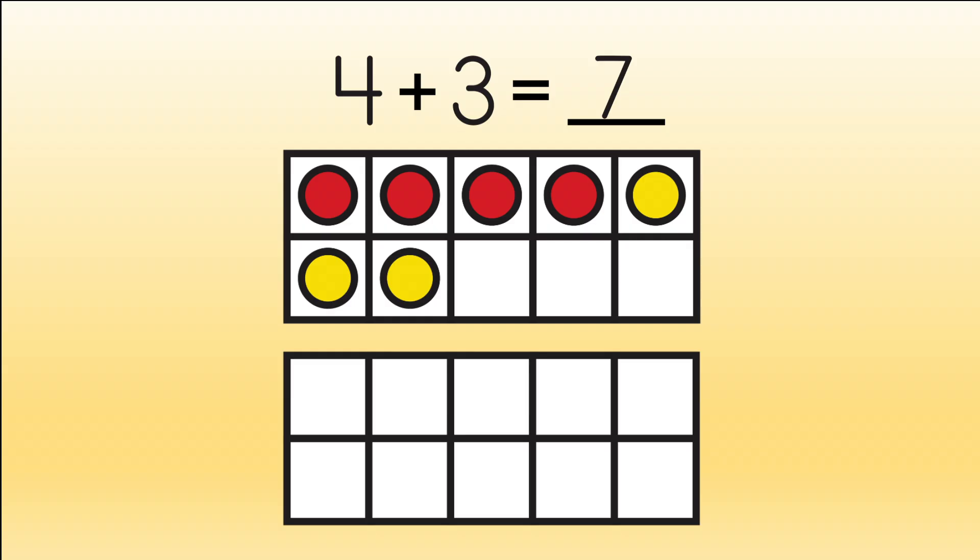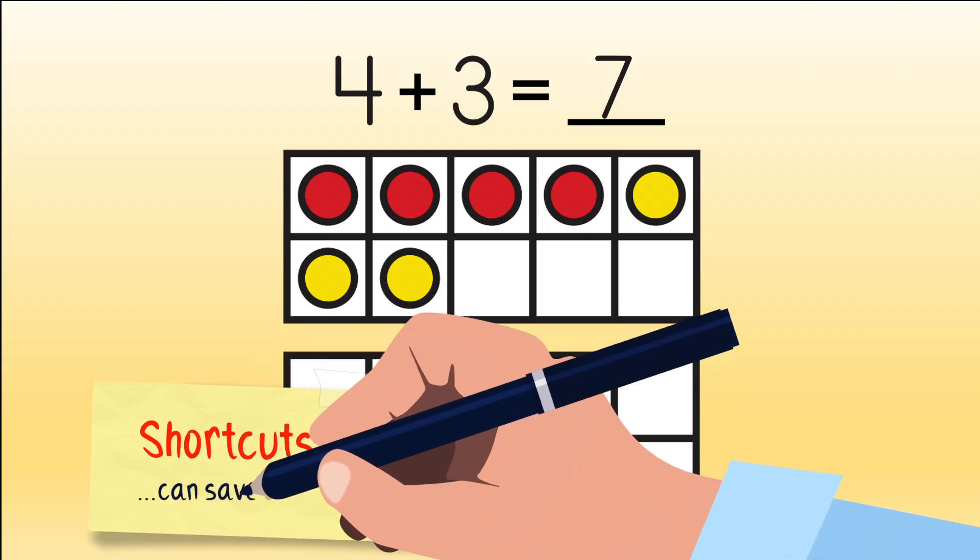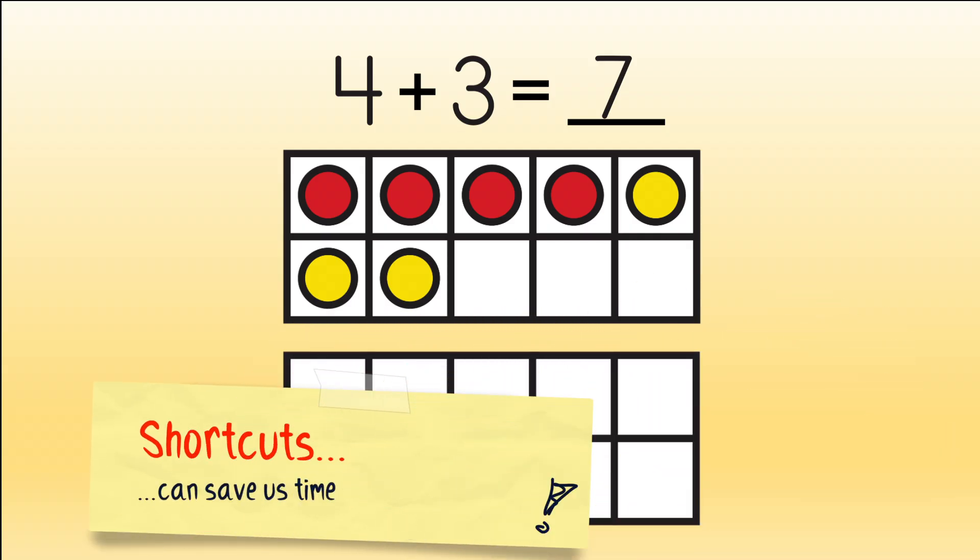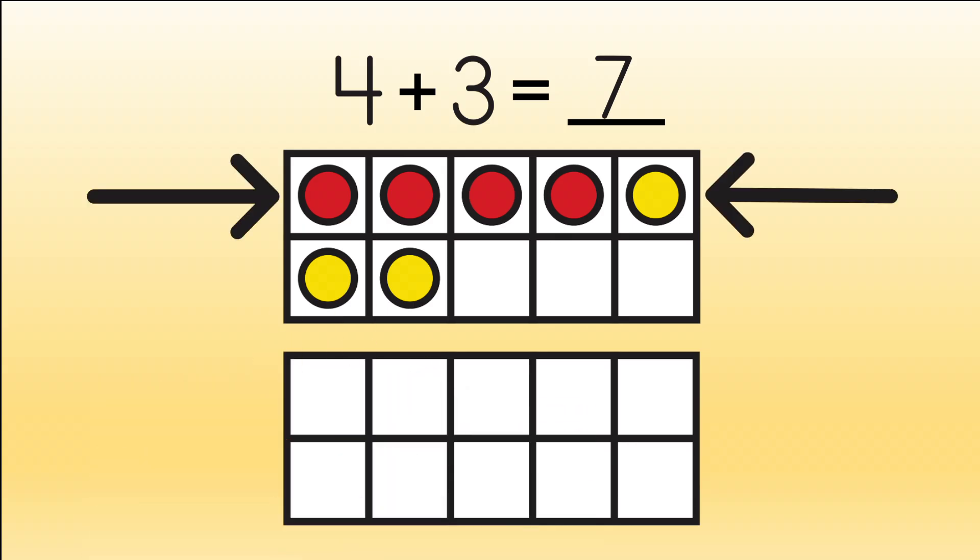A neat thing about these tools is that a lot of times there are shortcuts. A really cool shortcut is to look at the top group of boxes in our first tens frame. We can see that a full top row gives us five, right? So instead of counting one, two, three, four, five, six, seven, we can start at five and count up. This is five, six, seven. That saves us a little time.